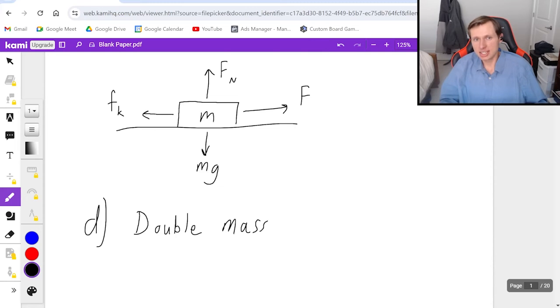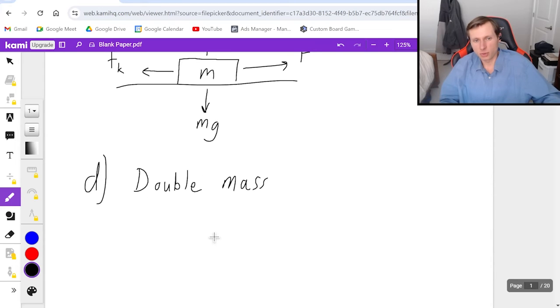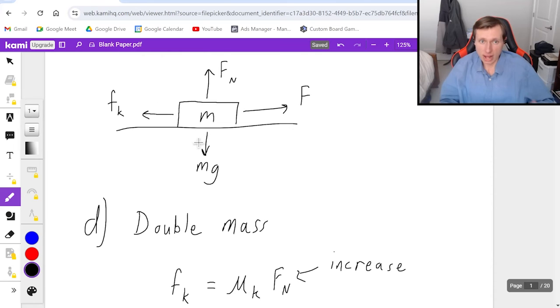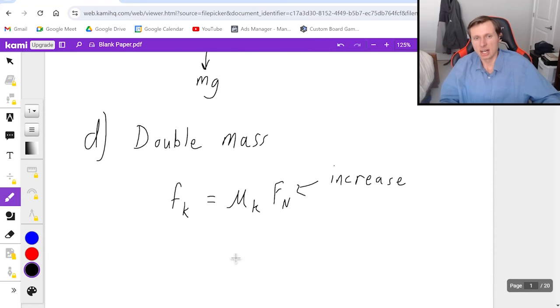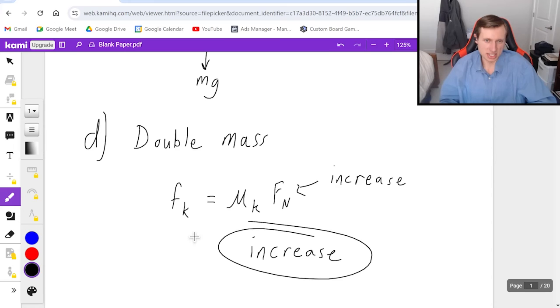Okay, and the answer is, doubling the mass will increase the friction force. The reason why, going back to the equation, Fk equals mu k times the normal force. Mu k stays the same, because that only depends on the surface. And Fn is going to increase. And the reason why is because normal force is dependent on the force of gravity. So when you increase the mass, you're increasing the weight, which means you're increasing the normal force. Long story short, the friction force is going to increase for this example.